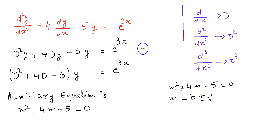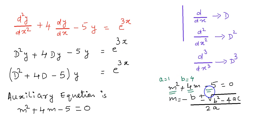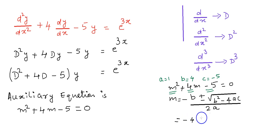Since m squared plus 4m minus 5 equal to 0 is a quadratic equation, we can use the formula m equals minus b plus or minus root of b squared minus 4ac by 2a. Here a is equal to 1, b is equal to 4, c is equal to minus 5. Now we substitute the values of a, b, and c in the formula.